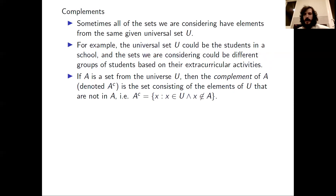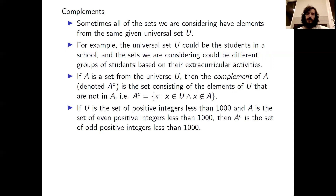We define that as the set consisting of the elements of U that are not in A. We can write that as the set of X for which X is in U wedge X is not in A. For example, if U is the set of positive integers less than 1,000 and A is the set of even positive integers less than 1,000, then A complement is the set of odd positive integers less than 1,000.